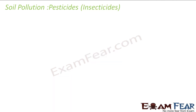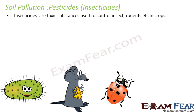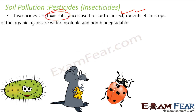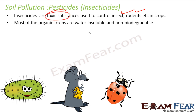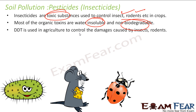Insecticides are part of pesticides and are generally used to control insects or rats in crops. They are also toxic substances. Most of these toxins are water-insoluble and non-biodegradable,